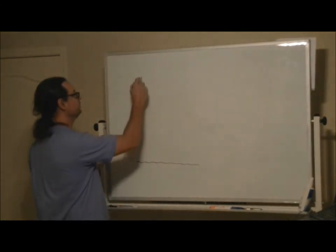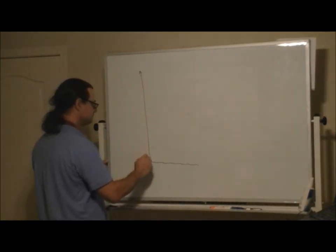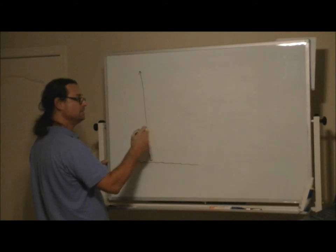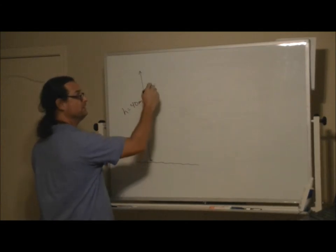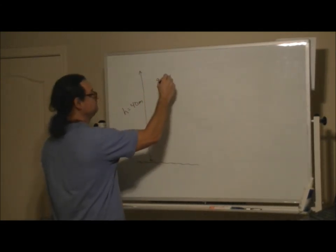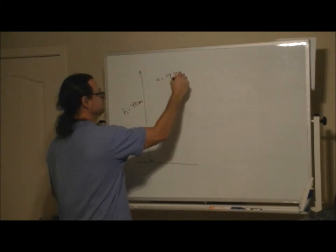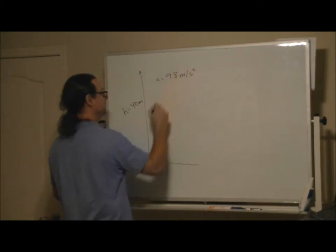All right, well, so there's the surface of the ocean. We have a height. I'm going to change the number here. I want to make the initial height, let's make it 40 meters. And the acceleration is 9.8 meters per second squared.